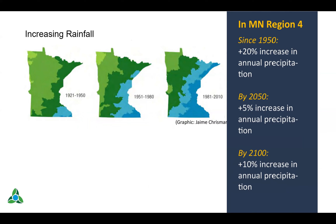We've seen increasing rainfall already. This chart shows the changing rainfall patterns throughout the state over the last century. Since 1950, our region has seen roughly a 20% increase in annual precipitation. By 2050 we can anticipate roughly a 5% additional increase — those projections do swing a little, so there's some variability. By 2100 we may see a 10% increase in annual precipitation.